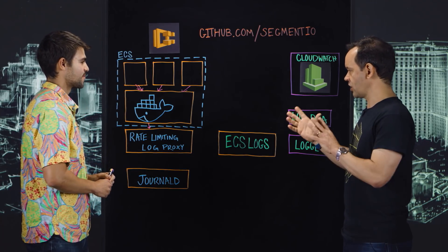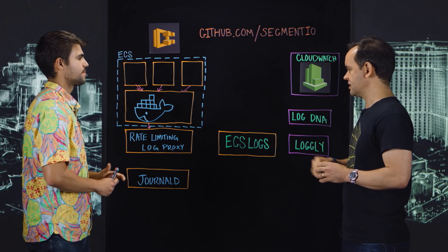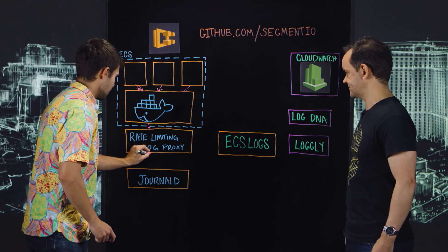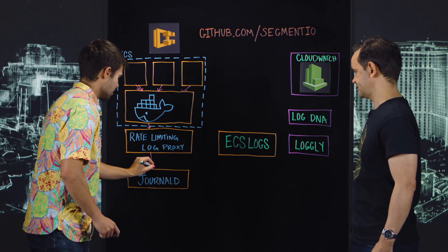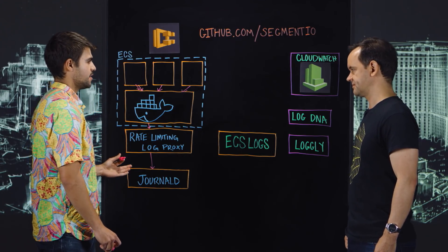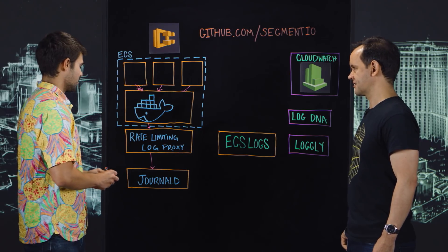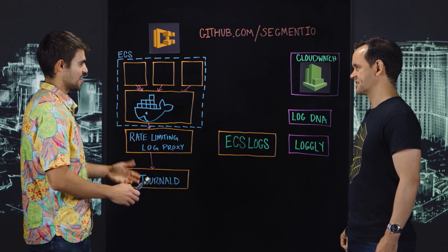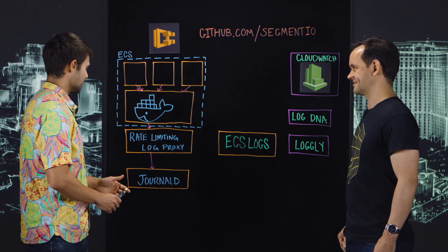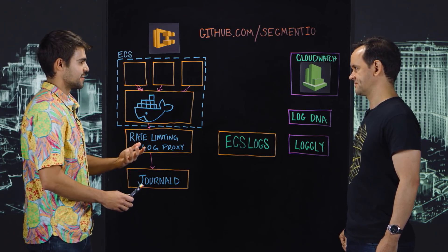So the logs come through the proxy and, assuming they're all behaving well, they go to journald. Here they're also tagged with the container ID and the service. But of course once they're there they're not that useful just sitting on each instance, so we have to do a step to get them off each instance.